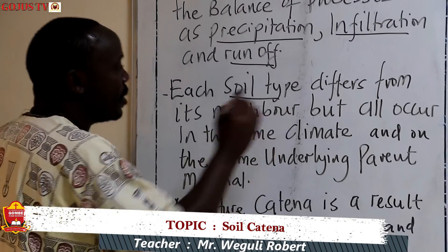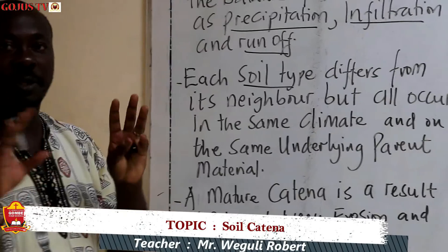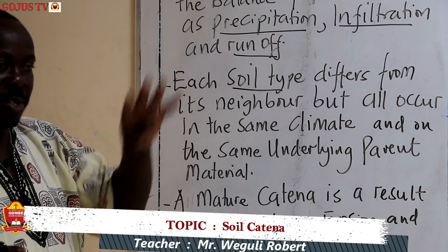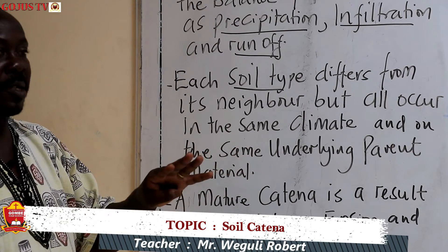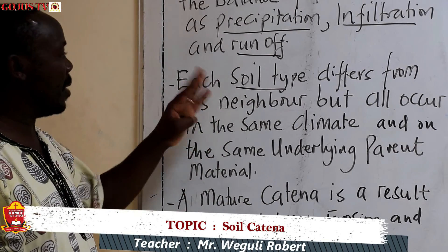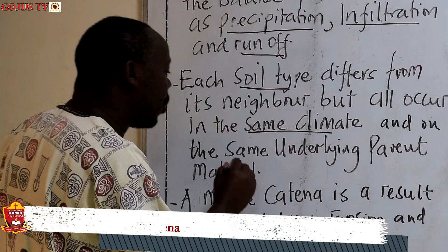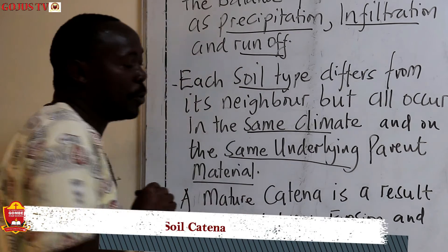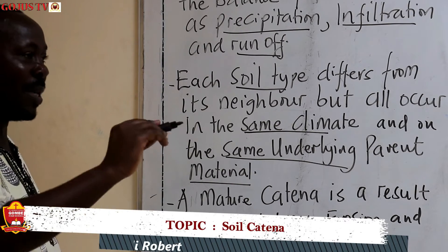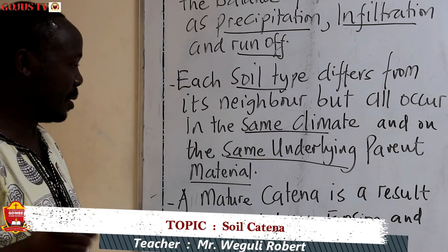Each soil type differs from its neighbor, but all occur in the same climatic region or same climatic conditions. So in the same climate, we shall have almost the same type of soils, but they differ in terms of color and many other things. In the same climate and on the same underlying parent material, as you move from the top of a hill to the bottom in the valley, the soil types are not the same.